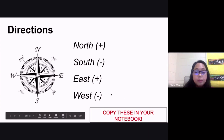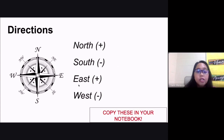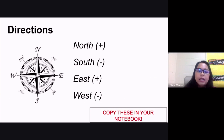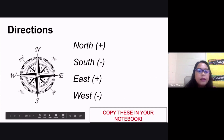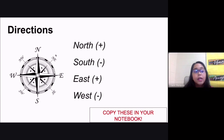I'll explain this as we go through the different examples. Your four major directions are north, south, east, and west — north and east use positive signs, south and west use negative signs. There are also directions between these four: between north and east is northeast, between south and east is southeast, between west and south is southwest, and between north and west is northwest. You will see these directions in the following examples.